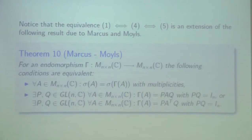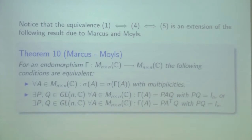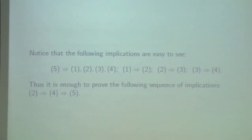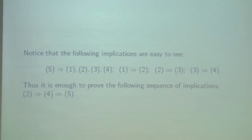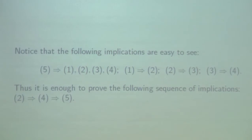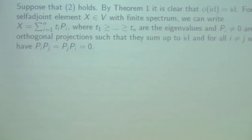The following sequence of implications is quite easy to see. To complete our proof, it is enough to establish the following sequence of implications. We suppose that the second condition holds, and use the key idea that the set of all self-adjoint operators with finite spectrum is dense in the set of all self-adjoint operators.